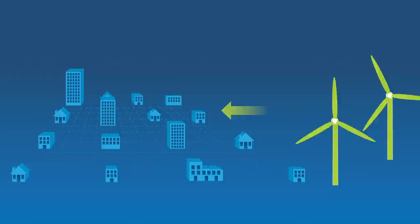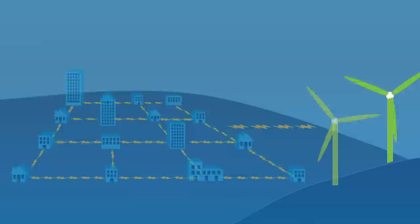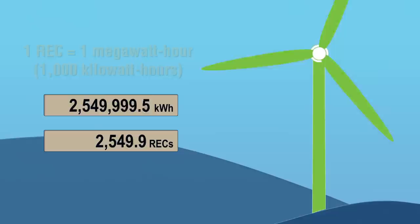Each REC represents a specific amount of electricity produced and delivered to the power grid by a renewable resource, such as wind or solar. Let's take a wind turbine, for example. For every megawatt hour of electricity it produces, the turbine's owner generates a REC that they can either keep or sell.